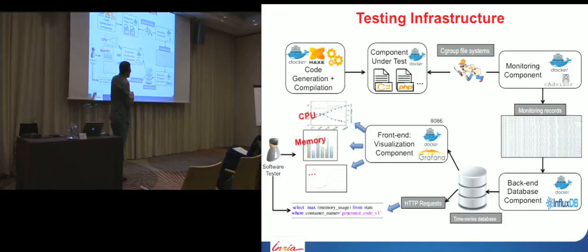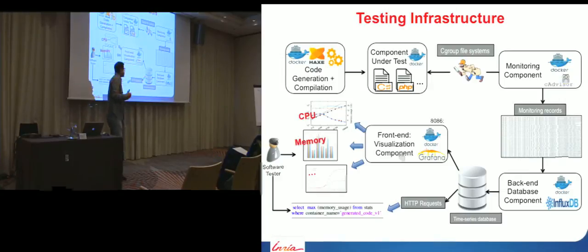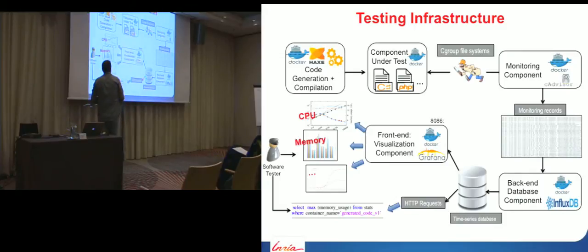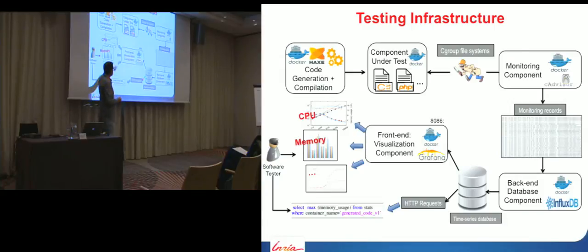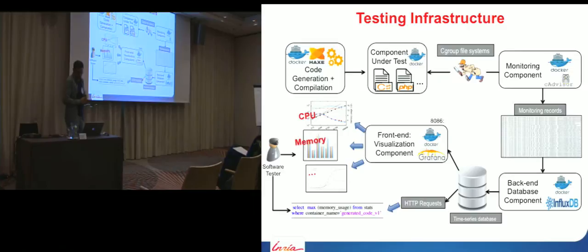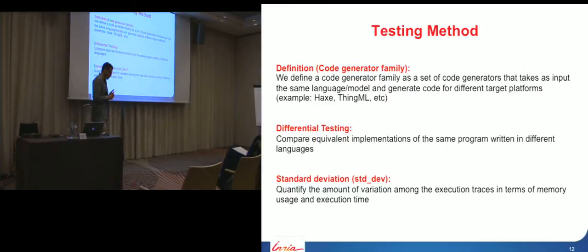The monitoring component accesses these cgroup files for each running component and extracts records about memory usage. Once we get these records, we plug in our monitoring component to a database to save this data. Afterwards, we provide two ways for the software tester to visualize the data: using a front-end visualization component to get an overview of memory or CPU usage, or by making direct HTTP requests to get the memory that a program has used.